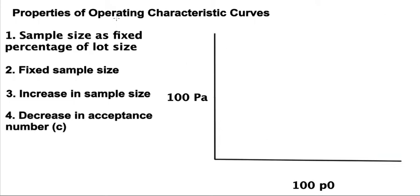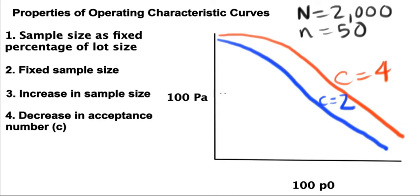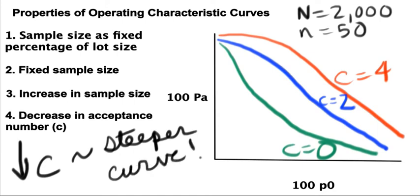This brings us to the last property of OC curves. Let's consider what happens when the acceptance number, or c, decreases. In this example, we have a lot size of 2,000 and a sample size of 50 for each of these three curves. The only difference is, in the first curve, we consider an acceptance number, or c, of 4. In the second example, we consider a c of 2, and in the third example, we consider an acceptance number of 0. So as you can see, as the acceptance number decreases, the curve becomes steeper.